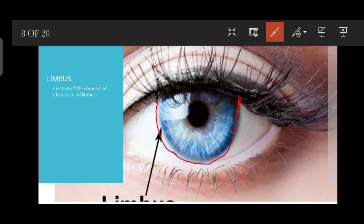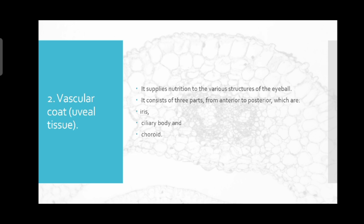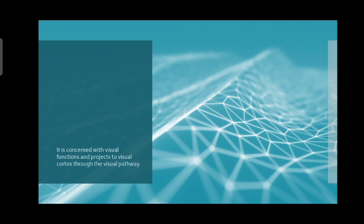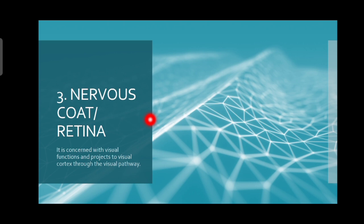Now let's move on to the vascular coat, the uveal coat or middle coat. The middle coat is responsible for supplying nutrition to the various structures of the eyeball. The uveal coat has three parts from anterior to posterior: the iris, the ciliary body, and the choroid. The retina is a very important structure concerned with visual functions and projects to the visual cortex through the visual pathway. It also consists of rod and cone cells responsible for our vision.